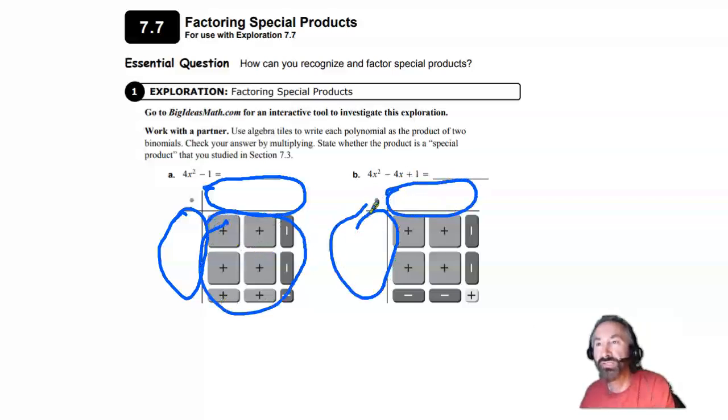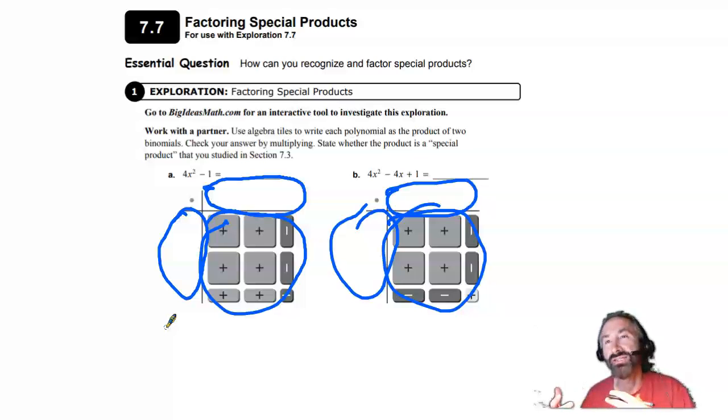And you'll do the same here. Fill in this part and fill in this part with the two factors that get you this product.